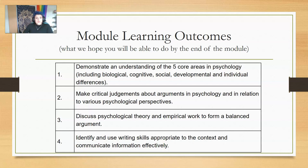Learning outcome two is to make critical judgments about arguments in psychology and in relation to various psychological perspectives. We'll teach you about psychological perspectives and expect you to be able to present some critique. Number three is to discuss psychological theory and empirical work to form a balanced argument.